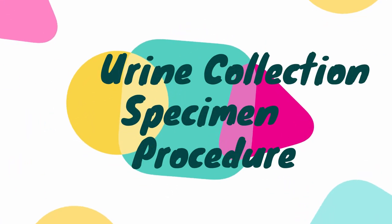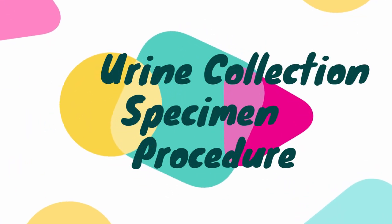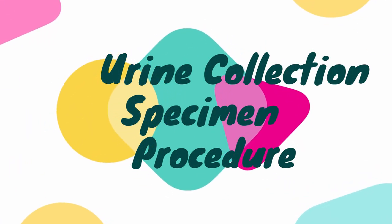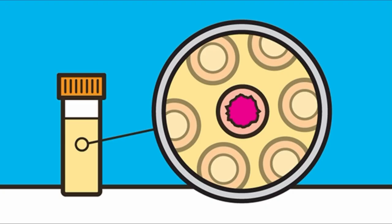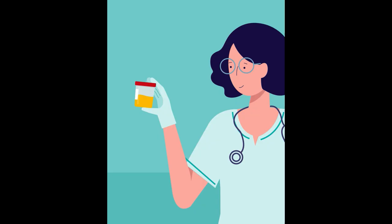Obtaining a urine specimen involves the collection of urine for laboratory analysis and may be the first step in determining a diagnosis and treatment. There are different types of urine specimen collection. We are now about to introduce the procedures of three of the following.